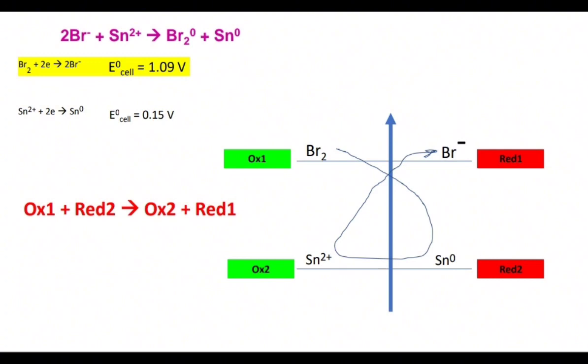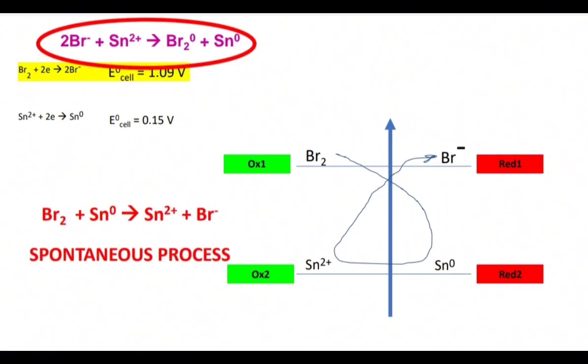As we said at the beginning, the spontaneous process will be when oxidizer one reacts with reducer two and we get oxidizer two and reducer one. We see that gamma is directed from oxidizer one, from bromine, to stannum, to reducer two.